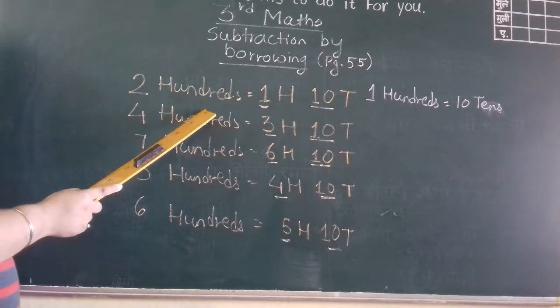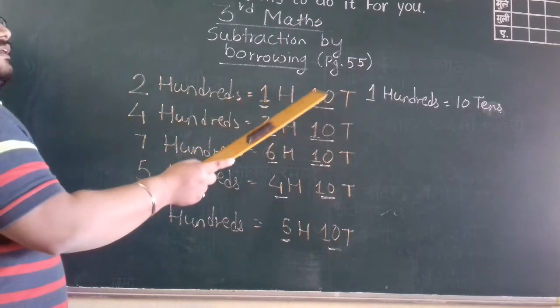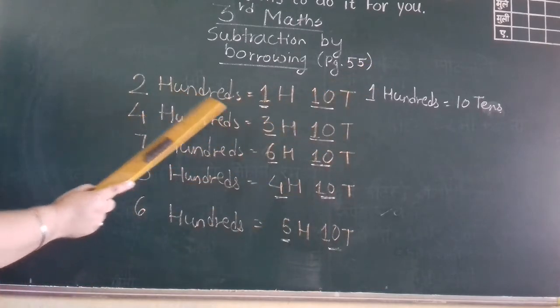We keep this away. Two hundreds. One hundred, ten tens means two hundred.